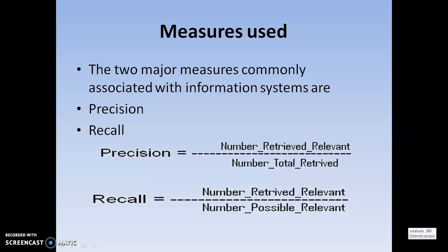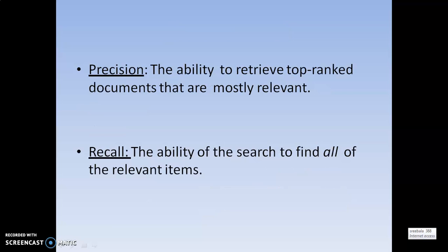Precision can be measured as the number of retrieved relevant items divided by the number of total retrieved. Recall is the number of retrieved relevant items divided by the number of possible relevant items. Precision is the ability to retrieve the top-ranked documents or items which are most relevant, always focusing on top relevance and exact relevance.